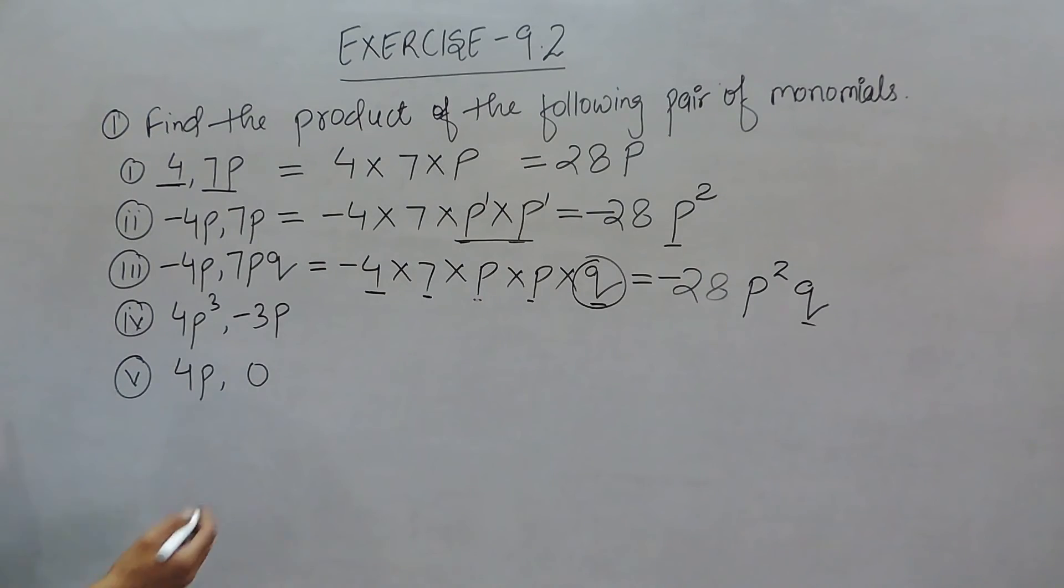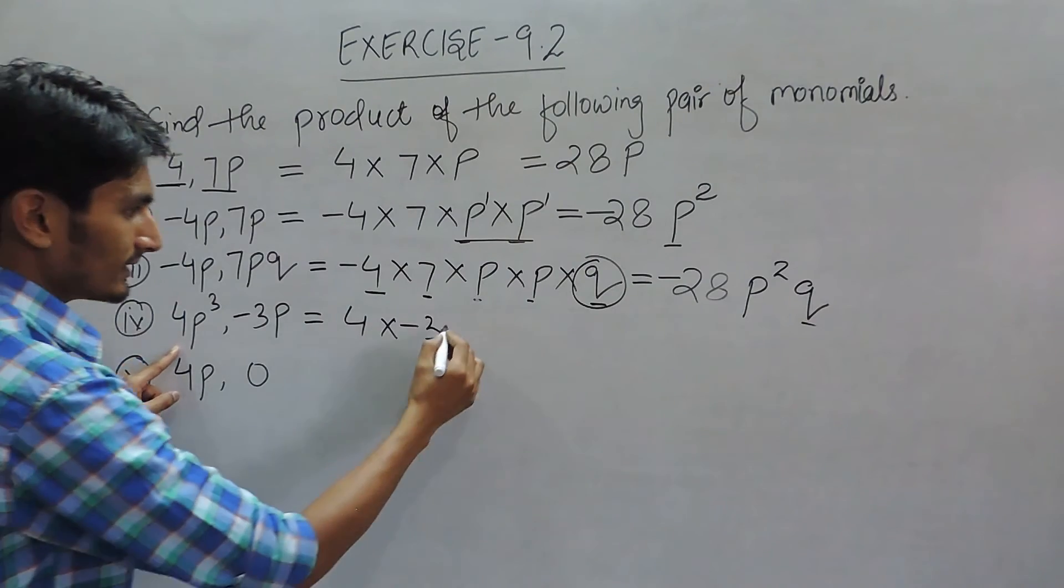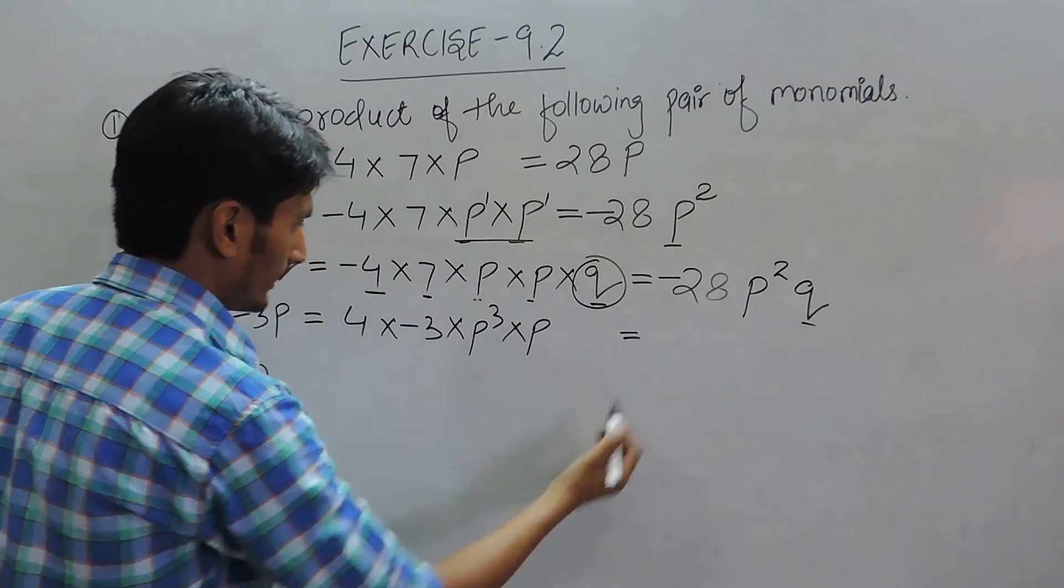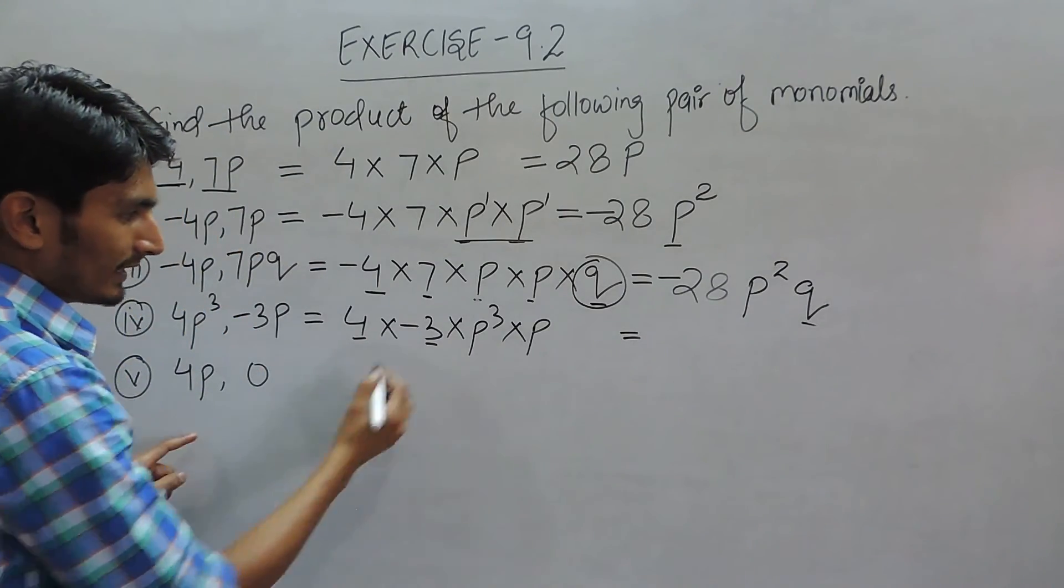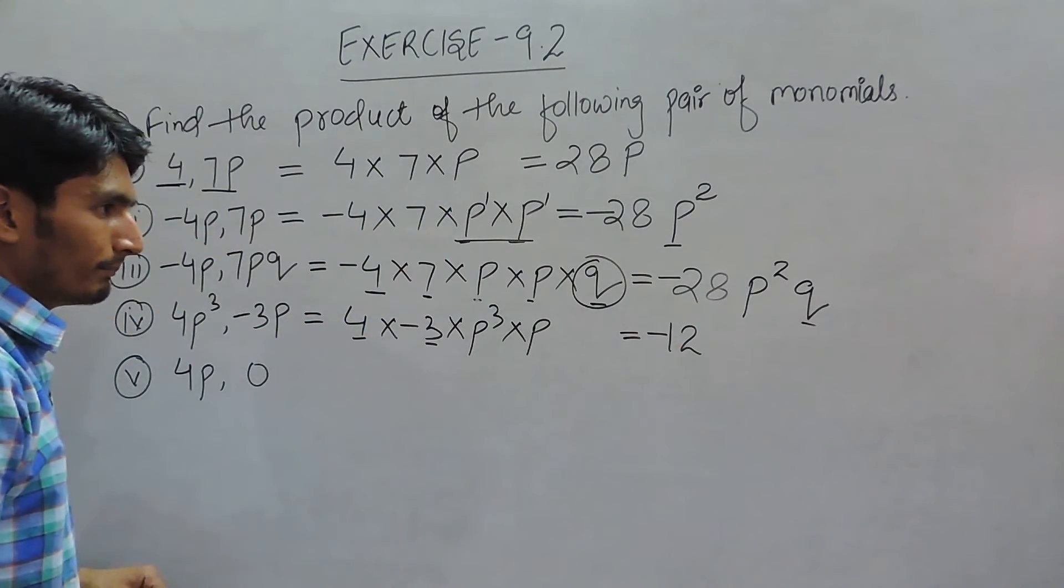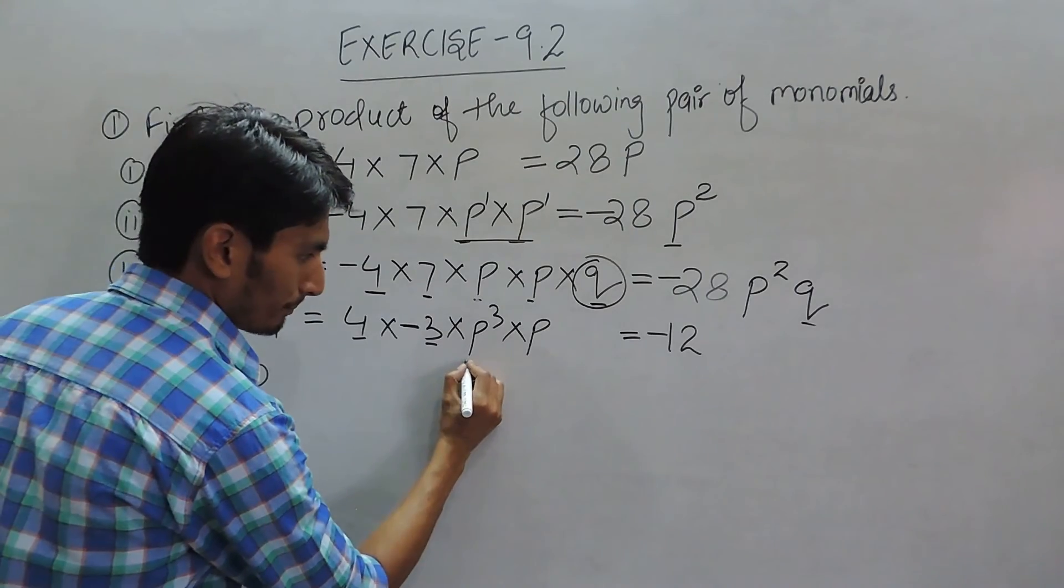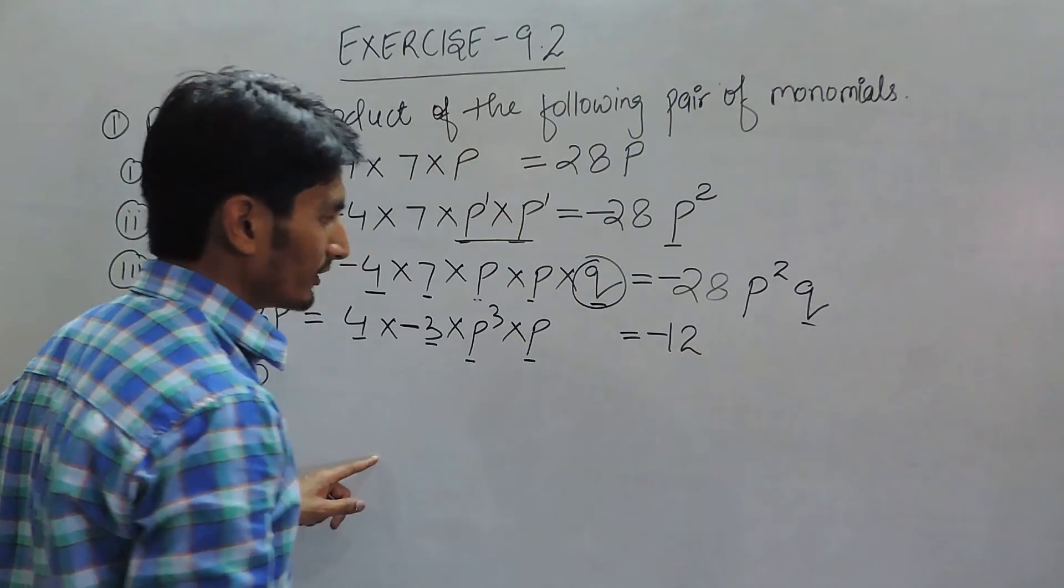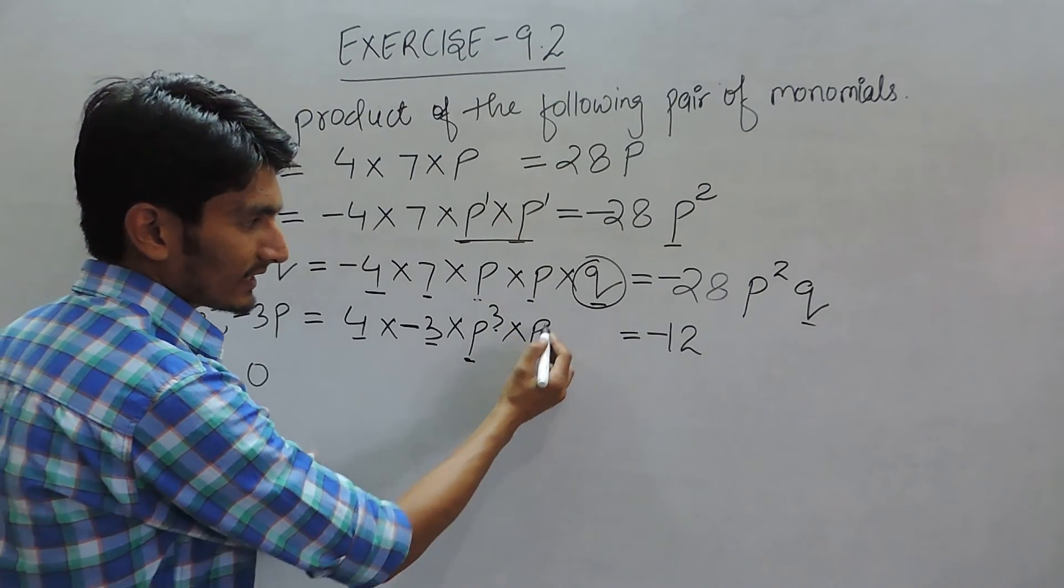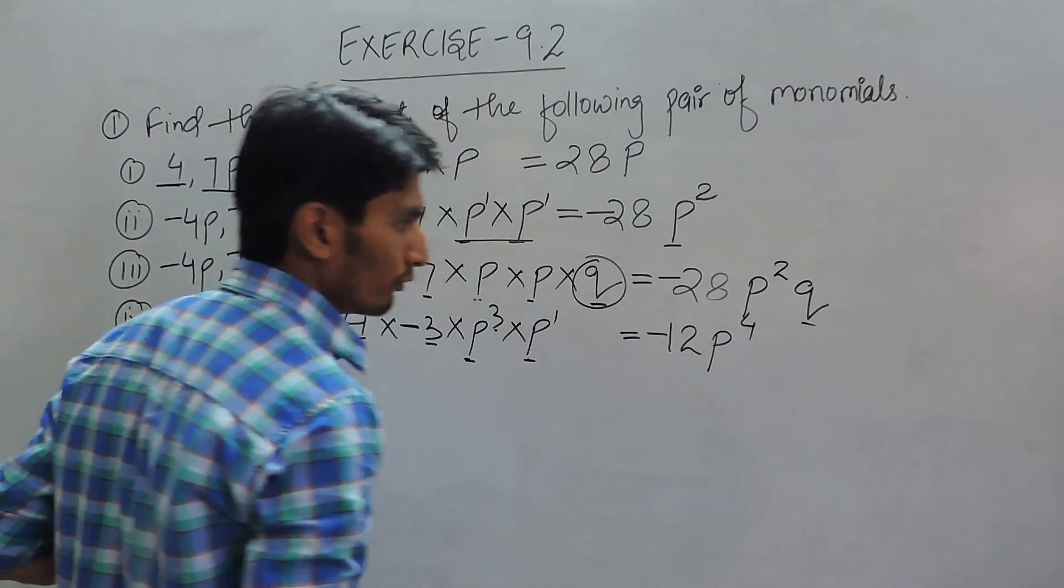In question number 4, again you have to multiply 4 by -3, and there is P³ when multiplied by P. In this case, these can be multiplied. So 4 times 3 is 12, and this will be -12 because one value has a negative sign. When P and P are multiplied, we know their power should be added. Here P has power 3, and in this case P has power 1. So the power of P should be equal to 4.